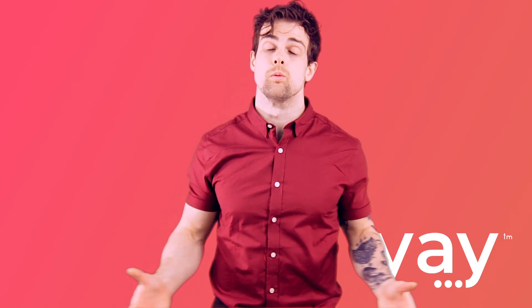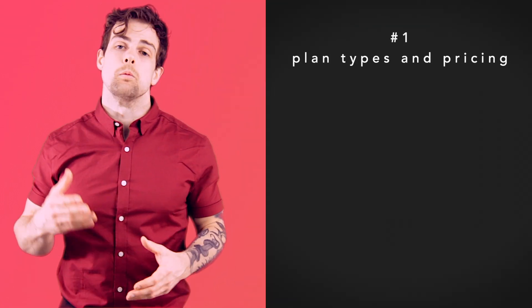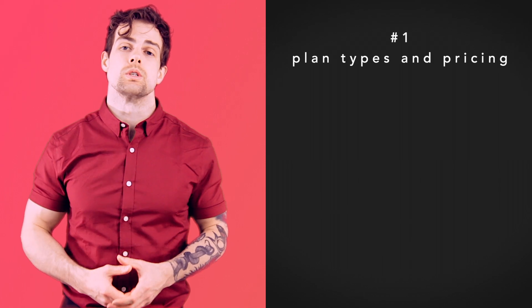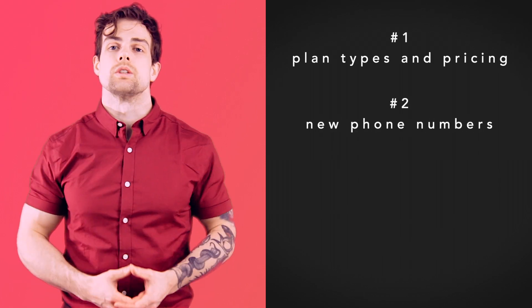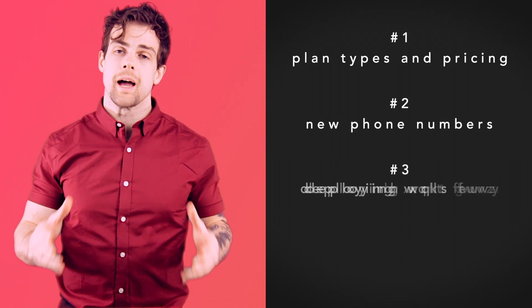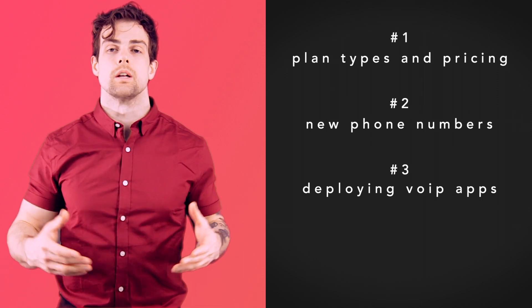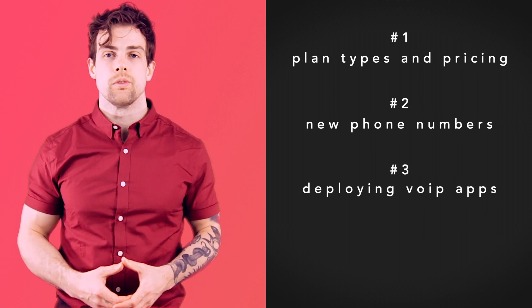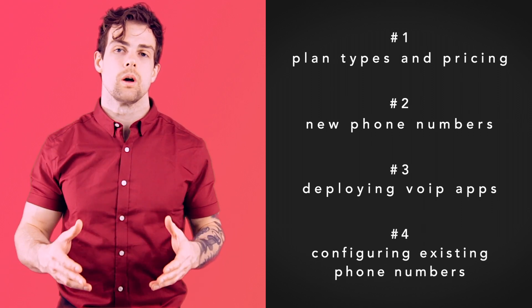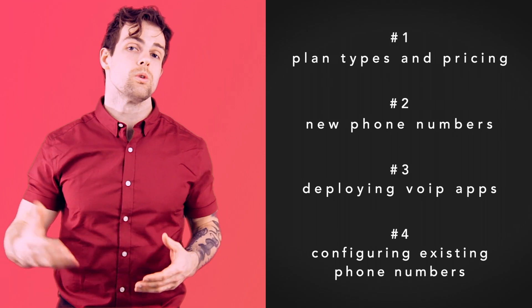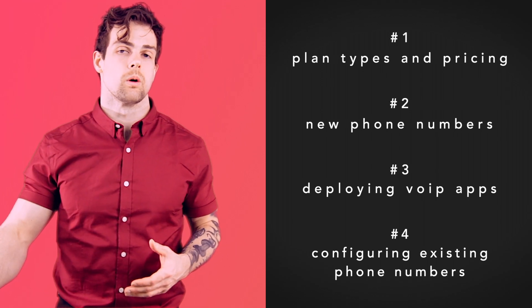Here is a quick rundown of what we'll be covering. We'll start with an overview of our plan types and pricing, and we'll talk you through choosing some new phone numbers for use with your account. Next, we'll discuss deploying our VoIP apps to your users. Finally, we'll take a look at getting your new phone system configured with any pre-existing phone numbers that you own that you still want to use going forward.